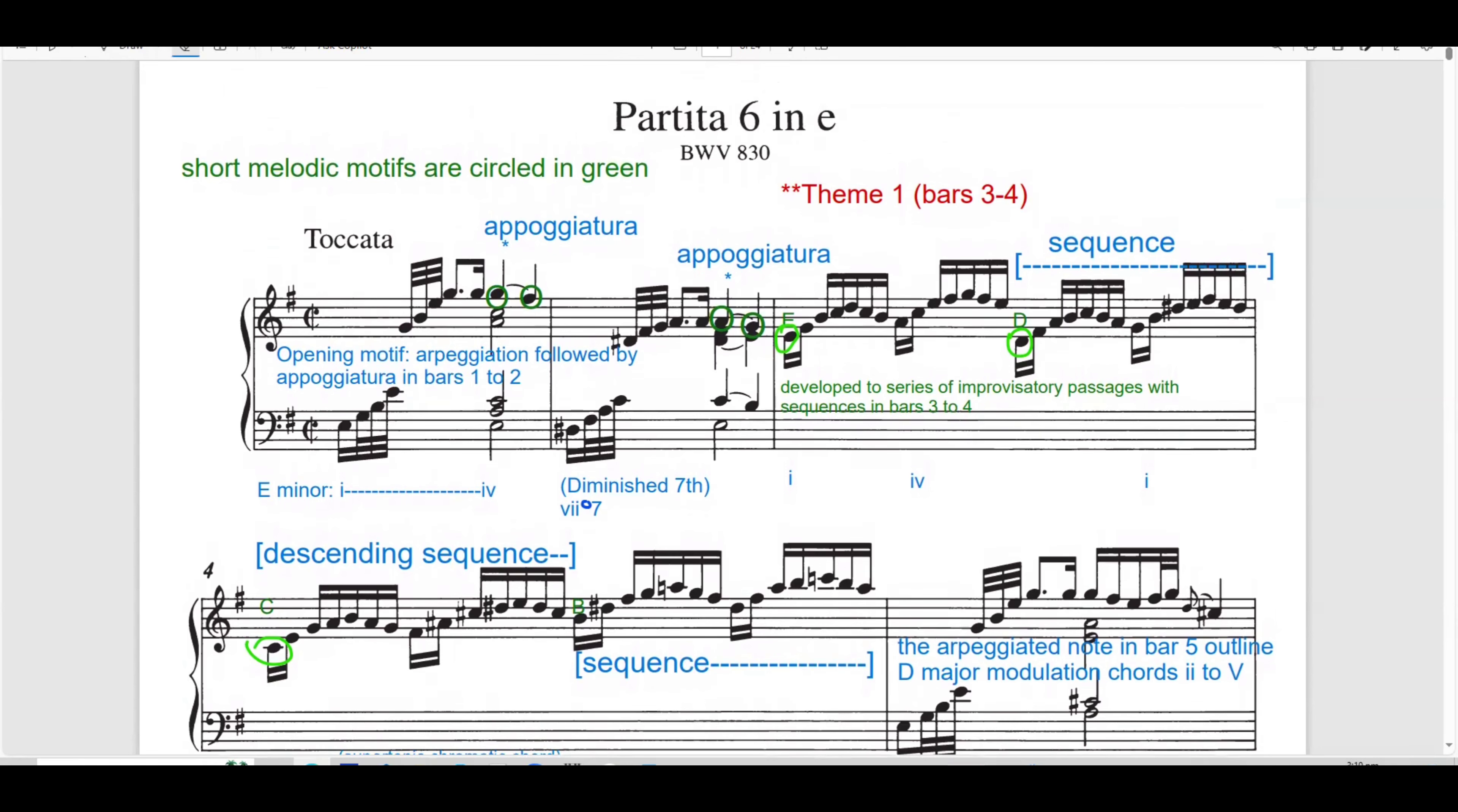So we are going to touch on all this in detail. In bar 1 to 2, there is an opening motif and initial harmonic structure. The piece opens with a motif of arpeggiation followed by appoggiatura. In bar 1 to 2, this sets the improvisatory tone characteristic of a Toccata.